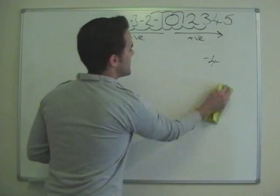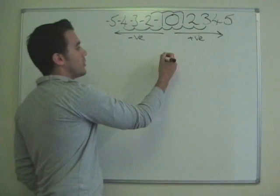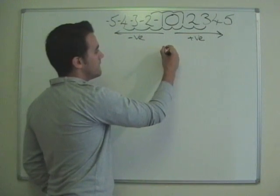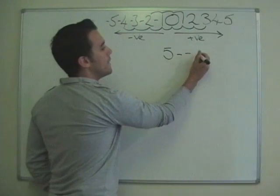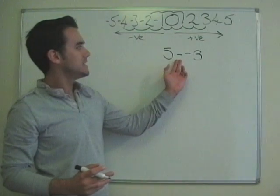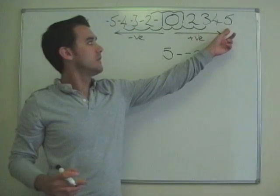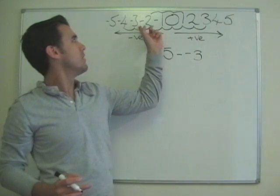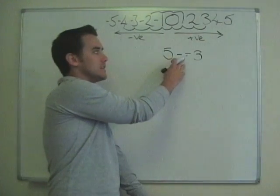So, another thing with negative numbers that a lot of people get confused about. What about if I've got five take away minus three? Okay, what do I do then? I've got five taking away minus three. So here's five, and I'm going to take away which means I'm going to move that way, but I'm taking away minus three. So how's that going to work? Well, I'm subtracting a negative.